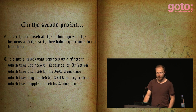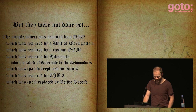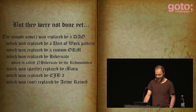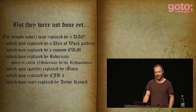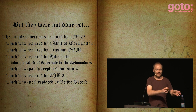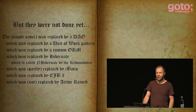But they were not done yet. The simple save was replaced by a data access object — who remembers those? Who still uses them? Which was replaced by a unit of work pattern. Which was replaced by a custom ORM, which was replaced by Hibernate, which is called N-Hibernate by the Redmondites. Which was partly replaced by MyBatis, because you didn't replace it everywhere — you just replaced it a bit, and now you've got two ORMs to worry about. Which was replaced by EJB3, which was not really replaced by ActiveRecord.